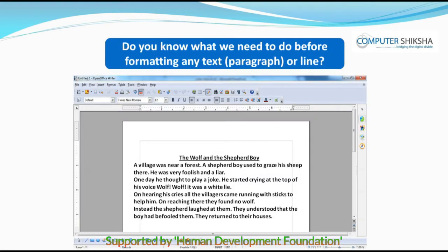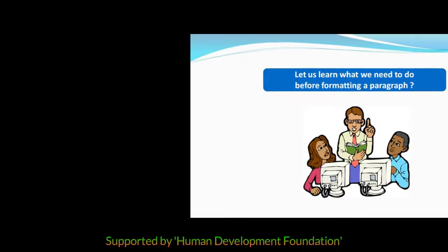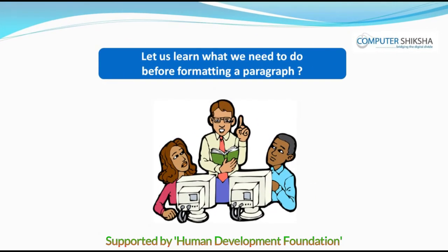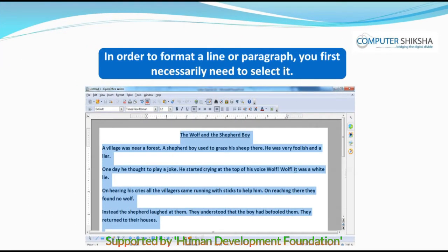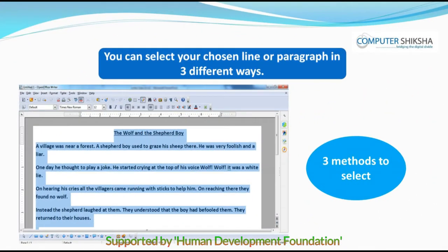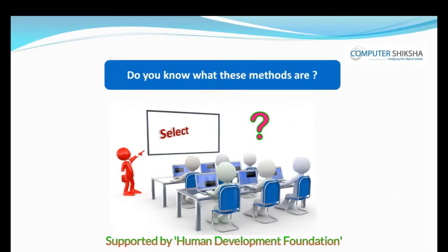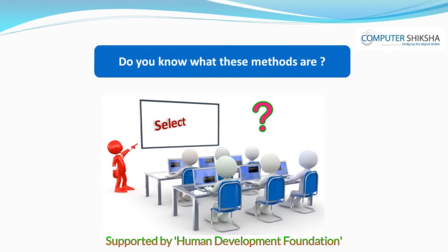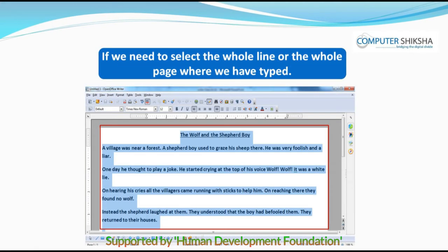Do you know what we need to do before formatting any text or paragraph or line? In order to format a line or paragraph, you first necessarily need to select it. You can select your chosen line or paragraph in three different ways. Do you know what these methods are?